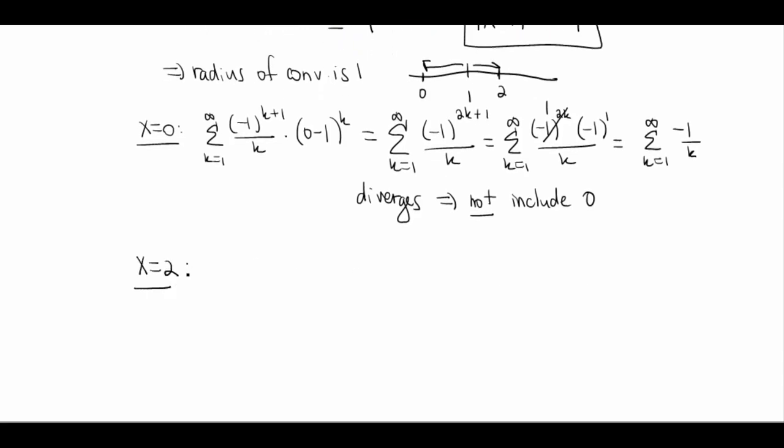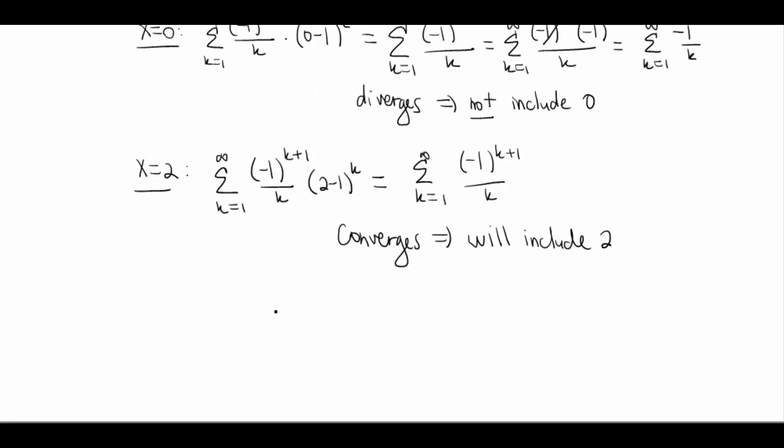Okay, let's look at 2 and see what happens at 2. K goes from 1 to infinity. So these problems really have a lot to them. There's a lot of stuff involved. But it's all bringing pieces together that we've done before, so that's always good. Well, 2 minus 1 is just 1 to the k. 1 to the anything is 1. So that's just gonna give us negative 1 to the k plus 1 all over k. This series alternates, right? So by the alternating series test, this one converges. So we will include 2.